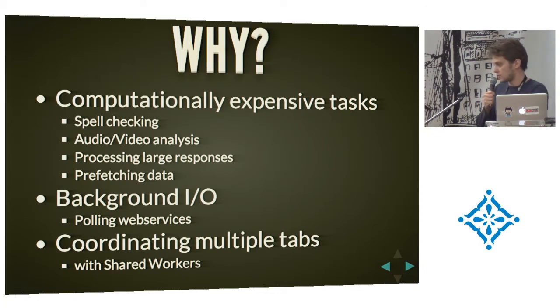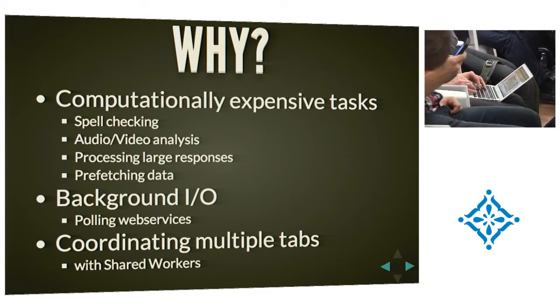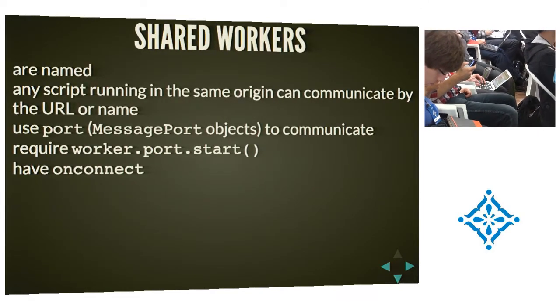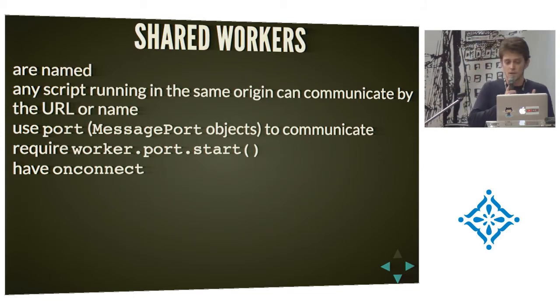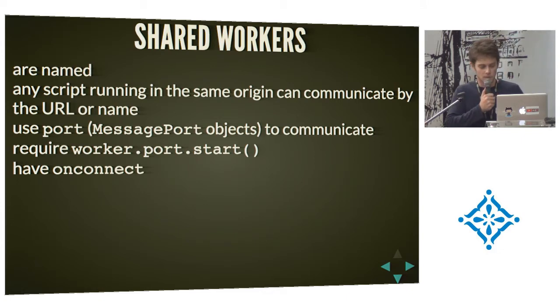You could also use web workers to make heavy IO — maybe poll web services. And this is a bit crazier: you could use web workers to share state between tabs, though support isn't 100% and I think not even Chrome is fully in with this. For that you'd use a special kind called shared workers. What I showed you before were dedicated workers, which are bound to the origin script. With shared workers, any script within the same origin can communicate with that worker by URL or by name, and they use message port objects to communicate. With dedicated workers the ports are implicit, but with shared workers you have to be explicit.